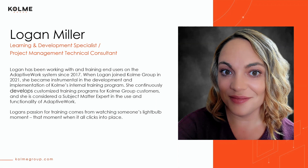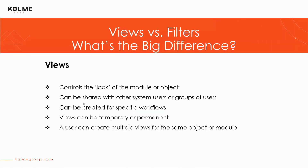Now, while these words — views and filters — can sometimes be misconstrued as interchangeable, they are actually very different and perform differently within an environment. So what exactly does a view do in adaptive work? Well, a view controls the look of the module or the object. It can be shared with others in the system, such as other users or user groups, and it can be created for very specific workflows. So you can have a view for project managers or a view for resource managers — it really can be tailored to those certain roles.